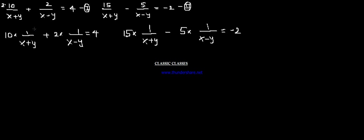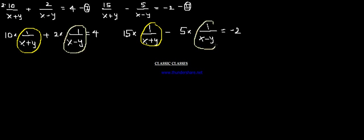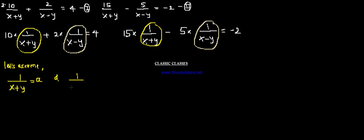Now we can identify the common parts. This 1 upon x plus y is one common part, and 1 upon x minus y is another common part. So what we will do is convert this from x and y into other variables. We will assume the common part 1 upon x plus y as a, and 1 upon x minus y as b.